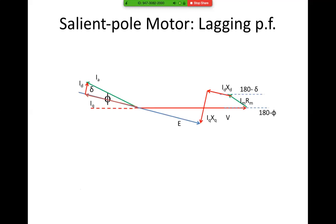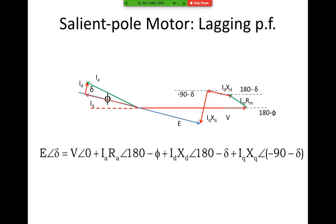The angle shown is 180 minus phi. For ID·XD it is 180 minus delta. And for IQ·XQ we have the angle minus 90 minus delta. Writing the equation: E angle delta equals V plus IaRa angle 180, plus ID·XD angle 180 minus delta, plus IQ·XQ angle minus 90 minus delta. Thank you, that will be all.